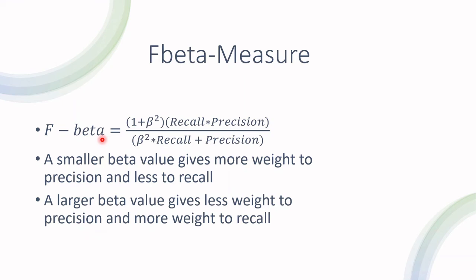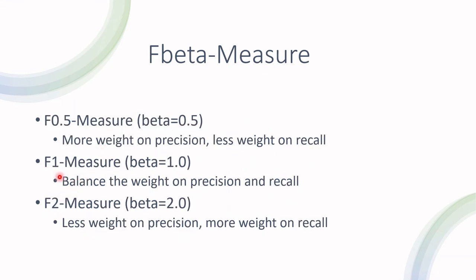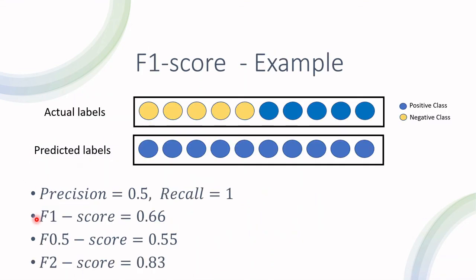Generally, there are three use cases for the F-Beta score. The F1 score, which we know, balances between precision and recall. The F0.5 measure, where beta equals 0.5, gives more weight to precision because the beta value is smaller. And the F2 measure gives less weight to precision because the beta value is larger. Looking at the same example as before, evaluating the F0.5 measure and the F2 measure, the value changes from 0.66 depending on the beta value. If beta equals 0.5, the score is smaller because there's more weight to precision. If we use the F2 score, it's larger because we give more weight to recall.